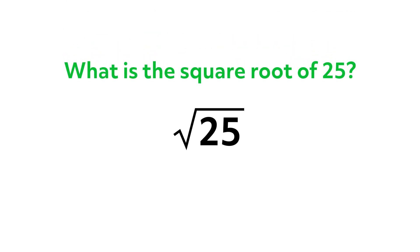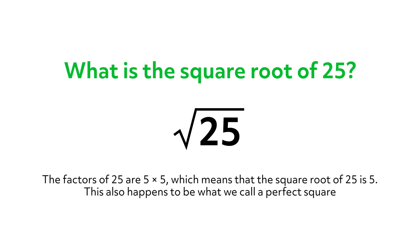Now let's talk about how we find the square root of a number. To do this, we ask ourselves what number multiplied by itself will give us the radicand. For example, what is the square root of 25? The factors of 25 are 5 times 5, which means that the square root of 25 is 5.